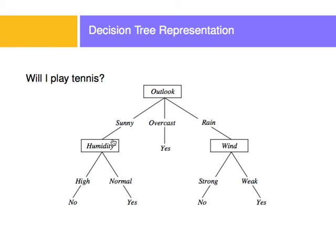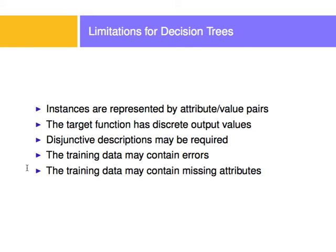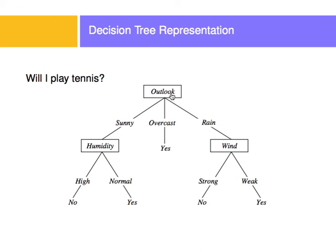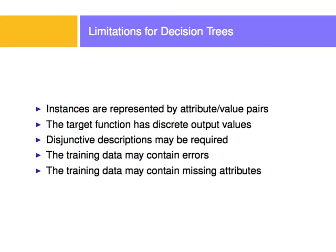For example, what if I know that the outlook is sunny, but I don't know what the humidity is going to look like? That's a missing value — I don't know what to do. That's a limitation of the decision tree; you need to have all of the values there. And what if I have a training example where the outlook was sunny, the humidity was high, and yet I still played? That contradiction is also a limitation for decision trees.